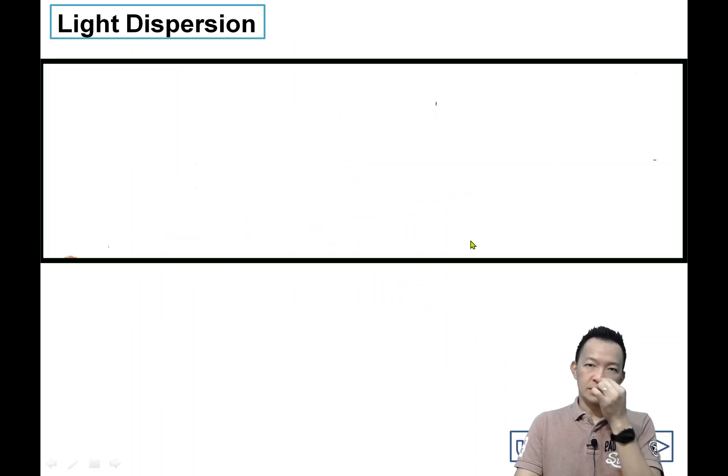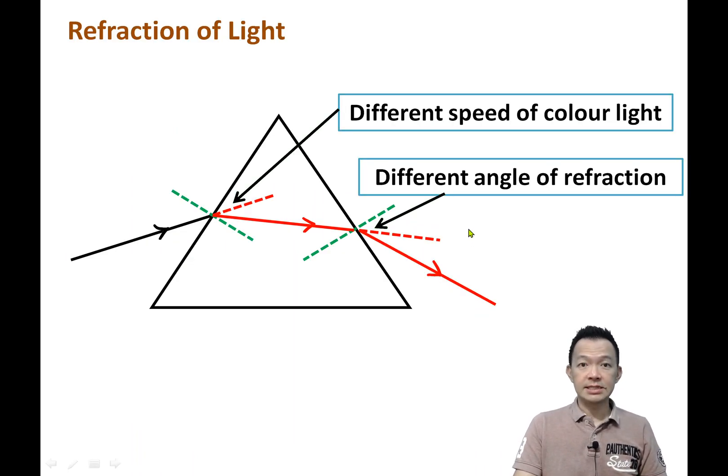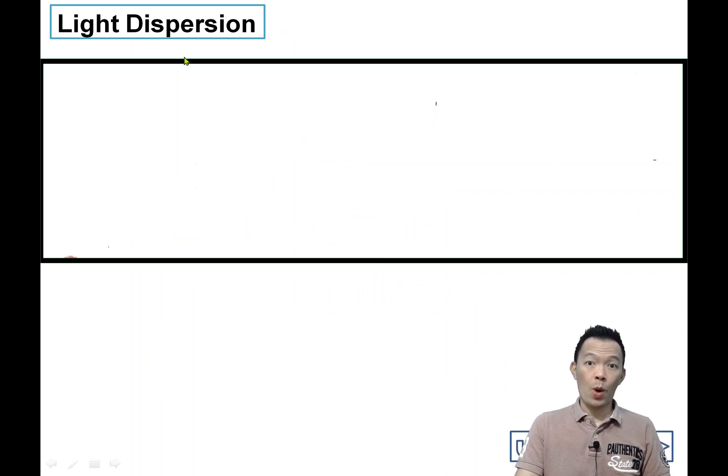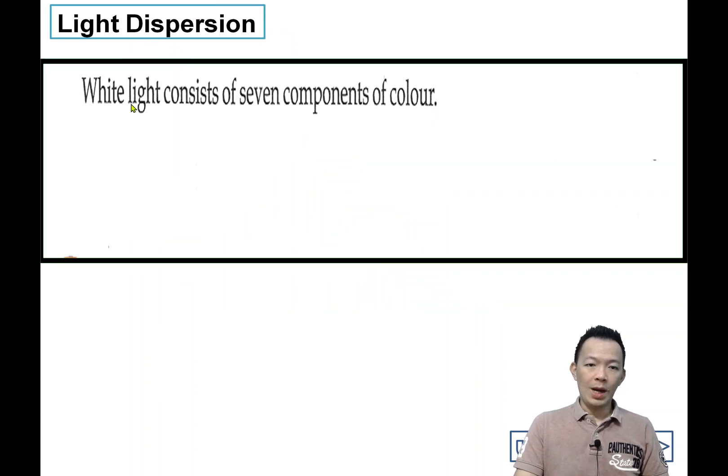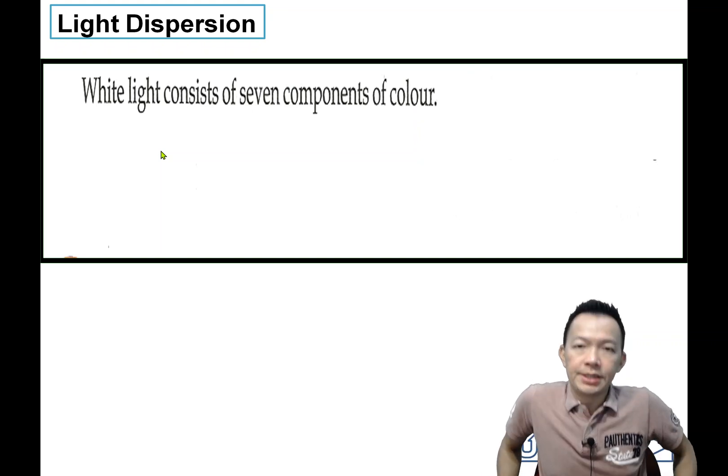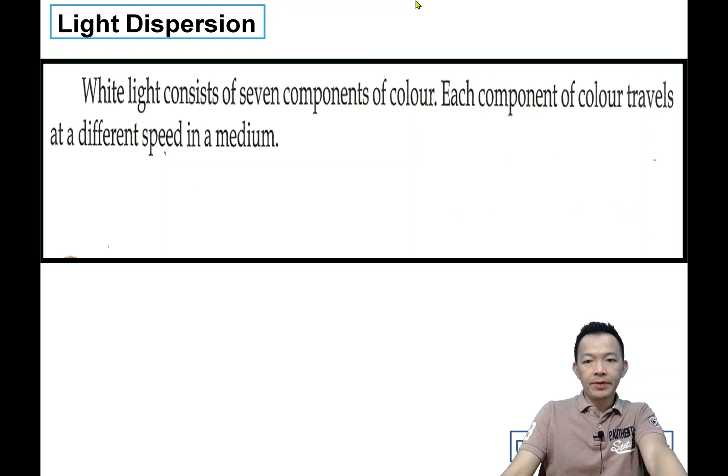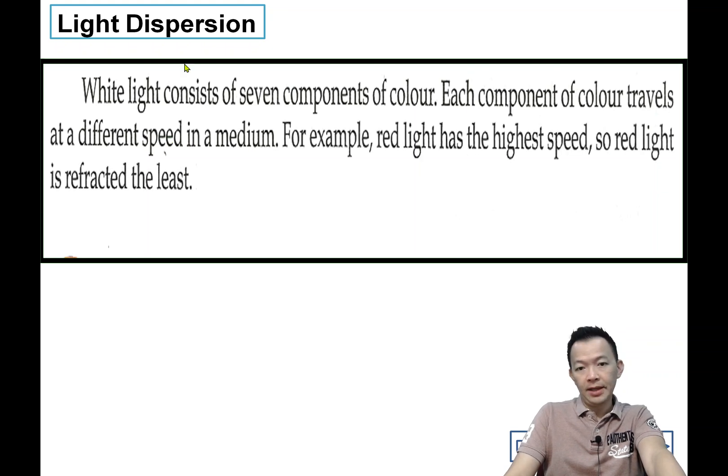Let's write the sentence first. Light dispersion: white light consists of seven component colors. Each component color travels at different speed in a medium. They're having different speeds.